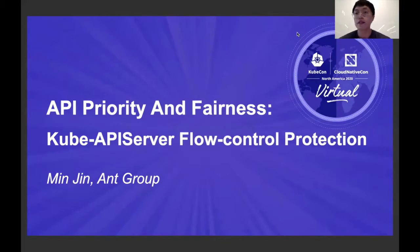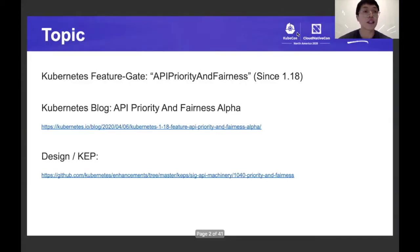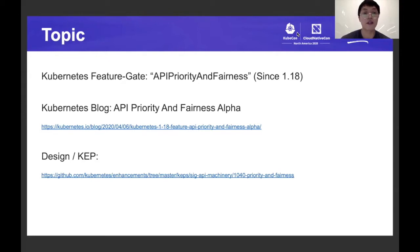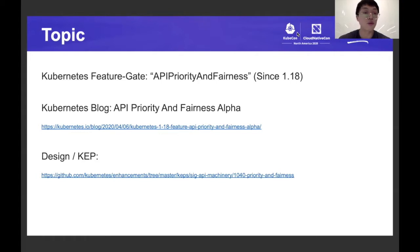Before we get started, I need to say that because this presentation is held online virtually, I enriched the contents of this PowerPoint so that you can check out the details after it's finished. The topic is about a new feature gate introduced into Kubernetes 1.18 release named API Priority and Fairness. Earlier this year in April, there was an official blog on the Kubernetes site named API Priority and Fairness Alpha. If you don't have any background information about this feature, I highly recommend you to read this blog — it's only going to take you about five minutes.